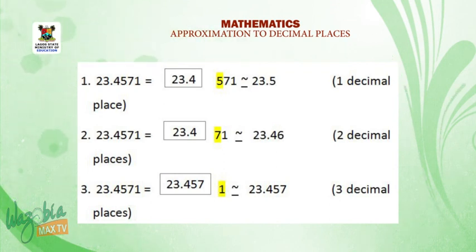The third one, which is to 3 decimal places, we have 23.4571, which means we need 4, 5 and 7. Now, 1 is less than 5, which means we round down. So our final result remains 23.457. Let us go on a short break. We will look at another example when we get back.